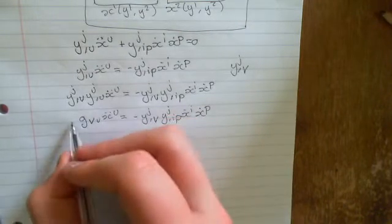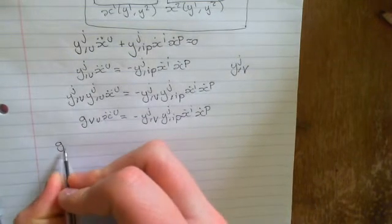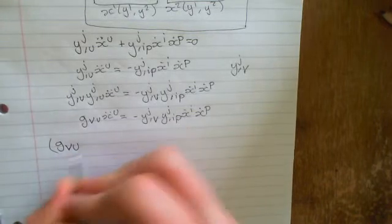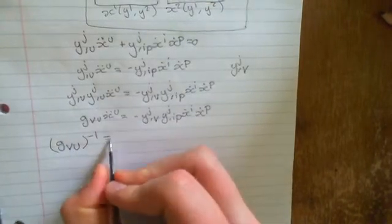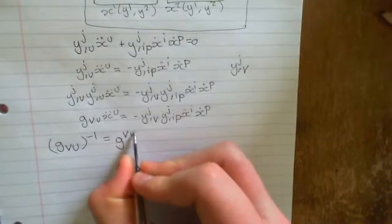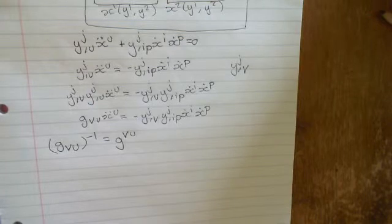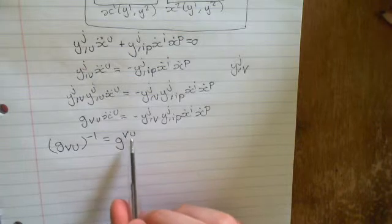So we're going to invert this metric tensor, and hopefully you know that the inverse metric tensor to g_vu is equal to g^vu, the contravariant metric tensor. Of course, we're going to contract the free index with this, so we're just going to contract v.